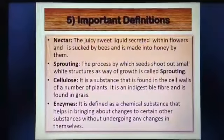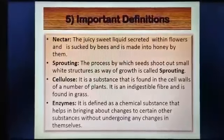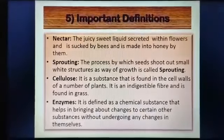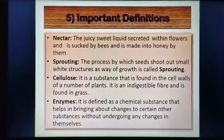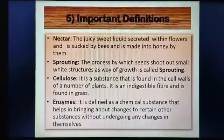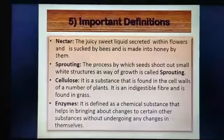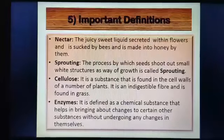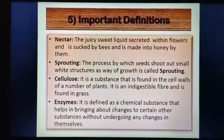Let us now discuss about some of the important definitions related to food. The first is nectar — a juicy liquid secreted within flowers that is sucked by bees and made into honey by them. Sprouting is the process by which seeds shoot out small white structures as a way of growth. Cellulose is a substance found in the cell walls of a number of plants; it is an indigestible fiber and is found in grass.